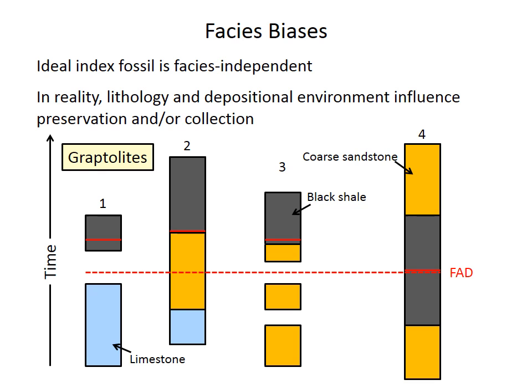In the case of graptolites, for example, which do not preserve well in coarser sandstone due to their non-mineralized skeleton, they will have a larger gap between the observed and the true FAD in column 2, because column 2 does not contain suitable facies for their preservation at the true first appearance. The graptolites show up quickly once you get black shale of favorable facies, but are not present in coarse sandstones.